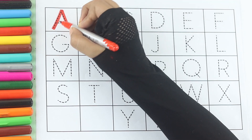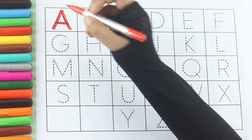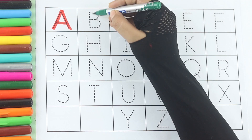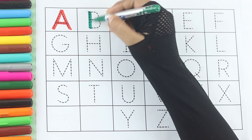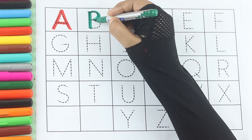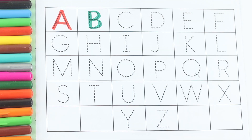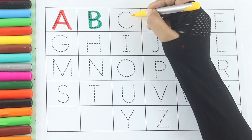A. A for apple. Green color. B. B for ball, yellow color.